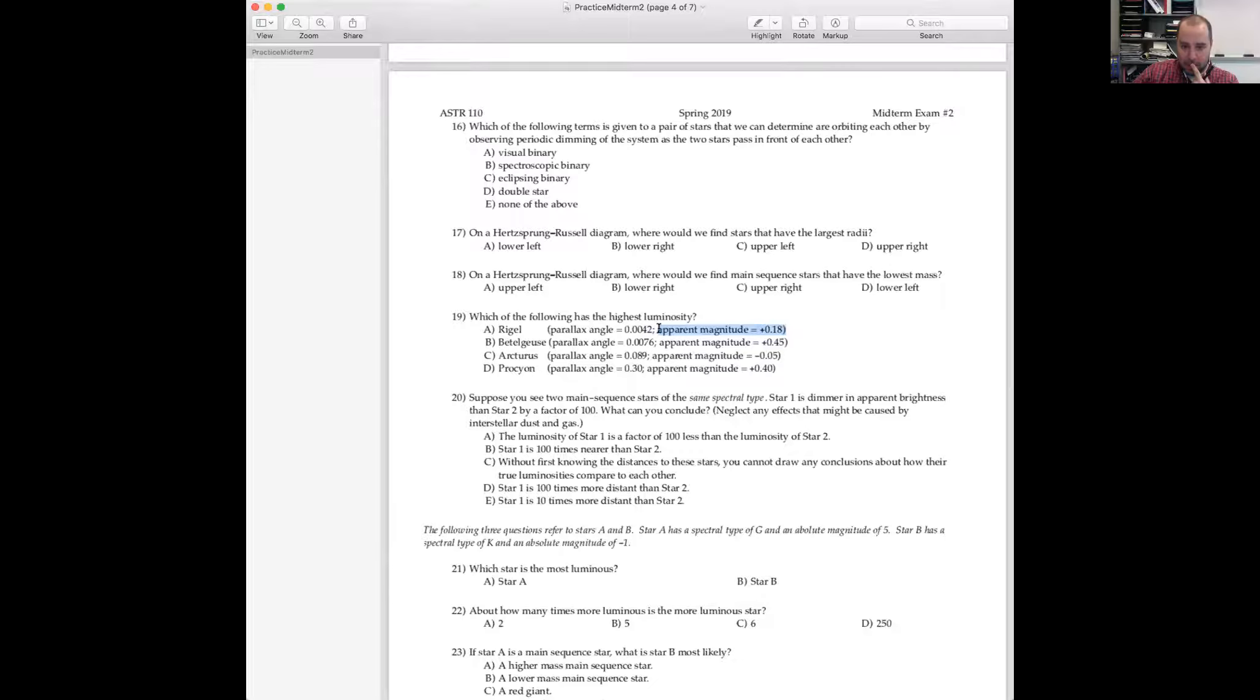You're given a parallax angle and you're given an apparent magnitude. So if I'd asked you which one looks the brightest, that would be really easy. You just look for the one that has the smallest apparent magnitude, which in this case would be Arcturus. But I asked you which has the highest luminosity, which has the intrinsically highest brightness. And that you don't actually know. How do you figure that out? Well, you need an absolute magnitude to get a relative luminosity.